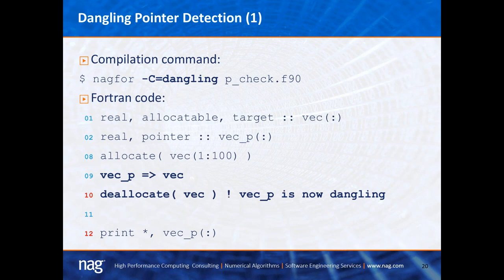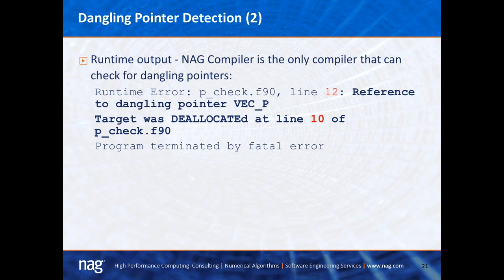The next check is the dangling pointer check, invoked with the -C dangling flag. In the example, line 1 has an allocatable target, line 2 has a pointer BEC_P which is a one-dimensional array. BEC is allocated on line 8, the pointer points to BEC on line 9, but on line 10 BEC is deallocated, making BEC_P dangling. Executing the code gives: 'runtime error line 12, reference to dangling pointer BEC_P, target was deallocated at line 10.' It tells you where the dangling pointer was used and where the target was deallocated. Notably, the NAG compiler is the only Fortran compiler that can check for dangling pointers.